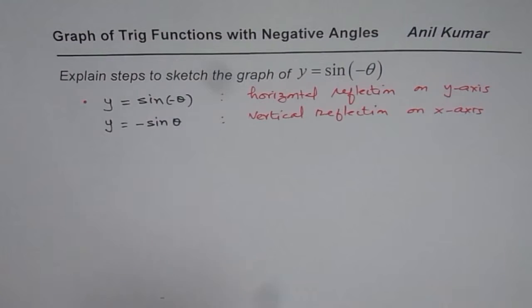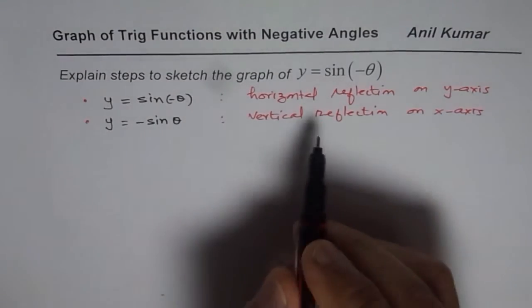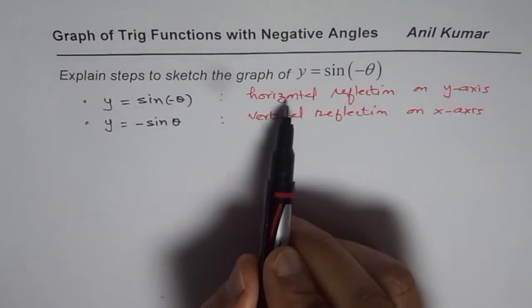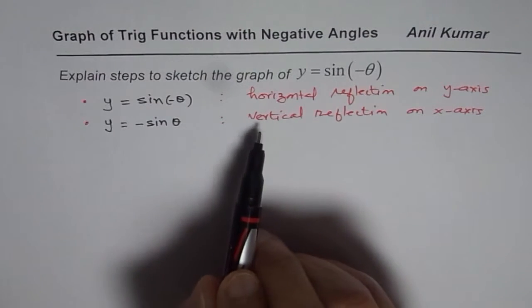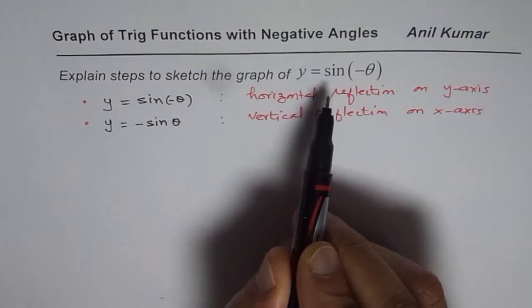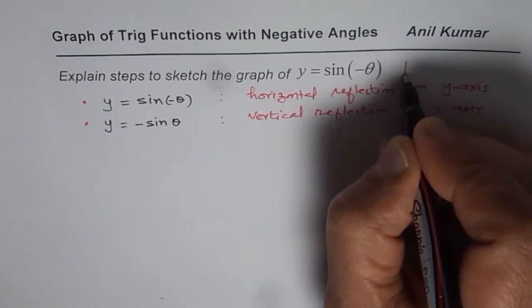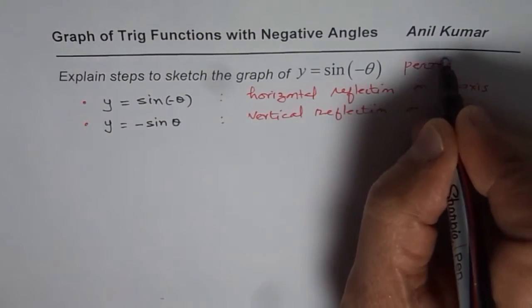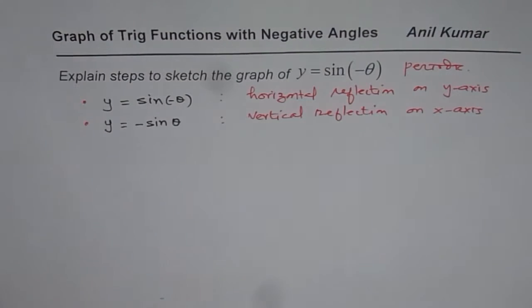Now, both these things are very different. But you get the same result. Both are different things. Let me be very clear at this stage. Horizontal reflection on y-axis and vertical reflection on x-axis, both are different things. But since the functions are periodic, we get the same result.